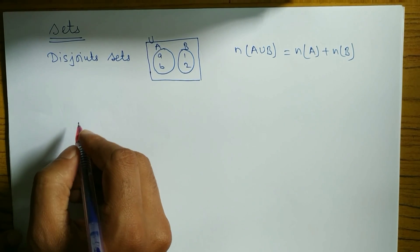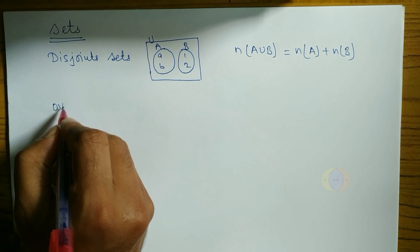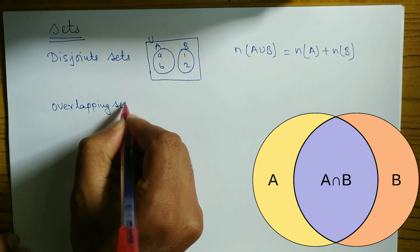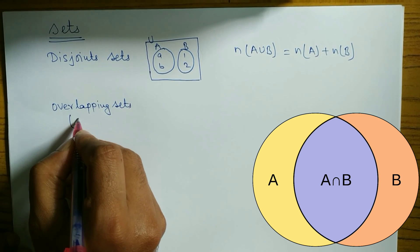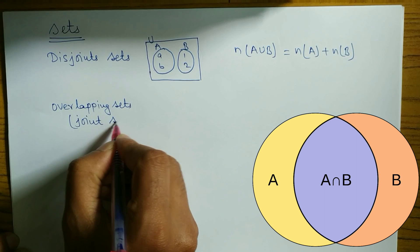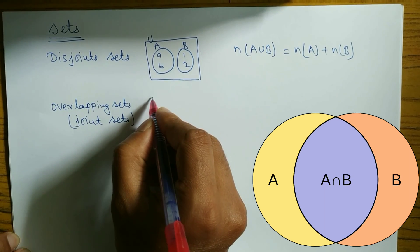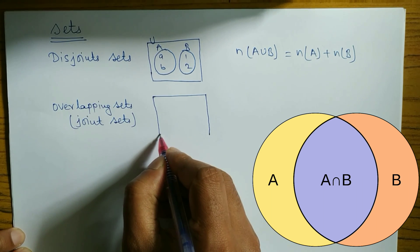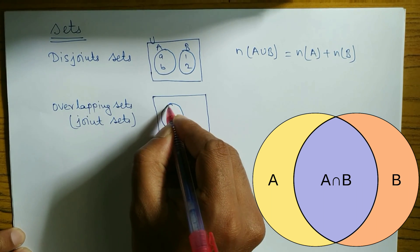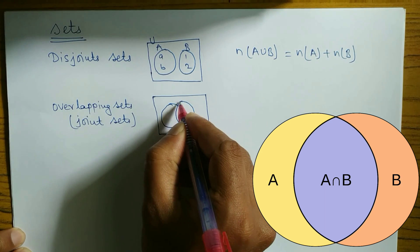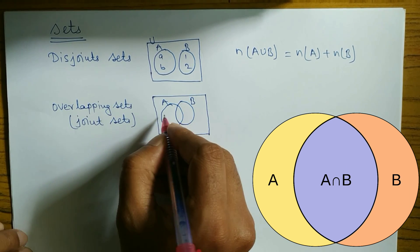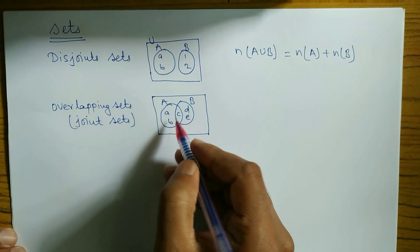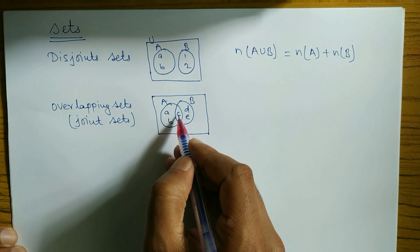Next is overlapping sets, also called joint sets. From the diagram you can understand properly what an overlapping set or joint set is. If elements are common, this type of set is known as a joint set.